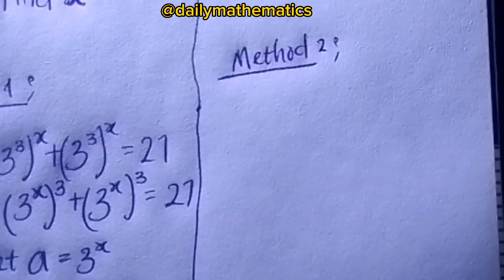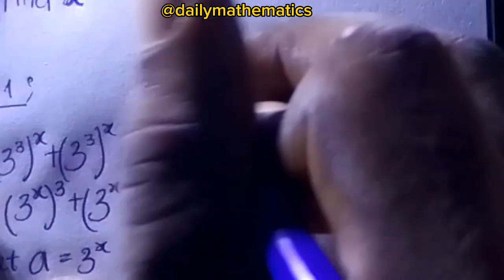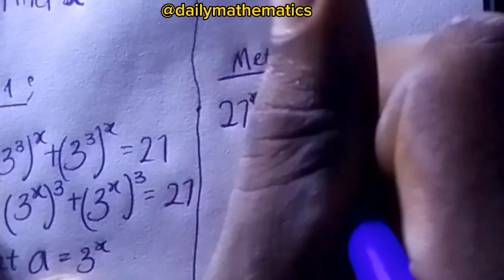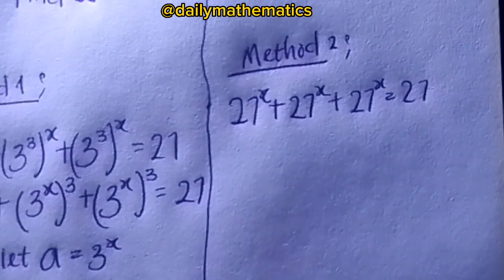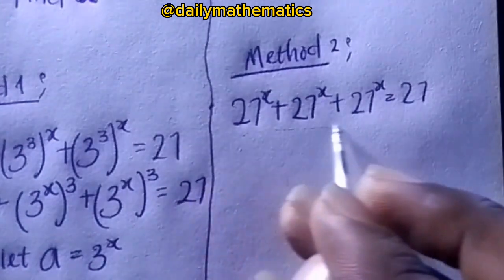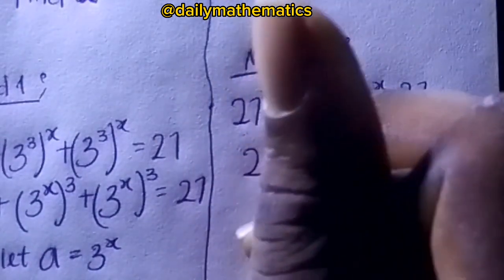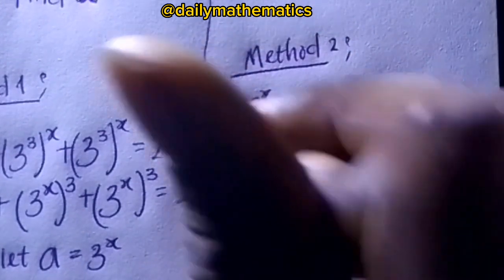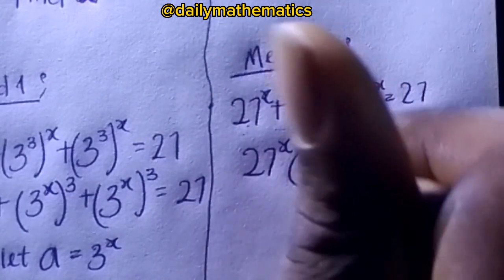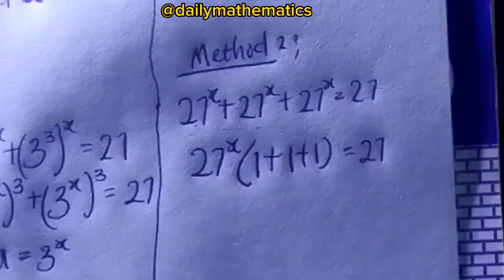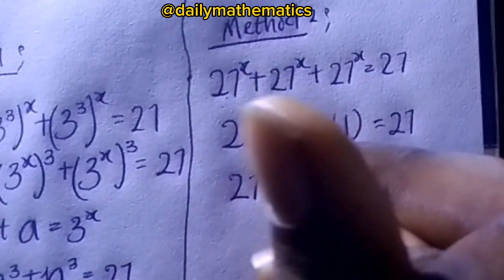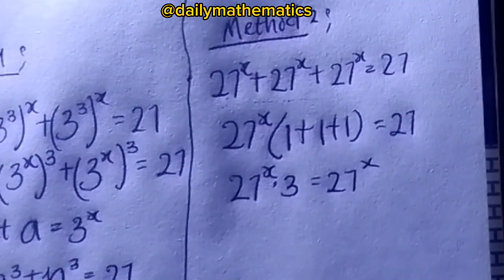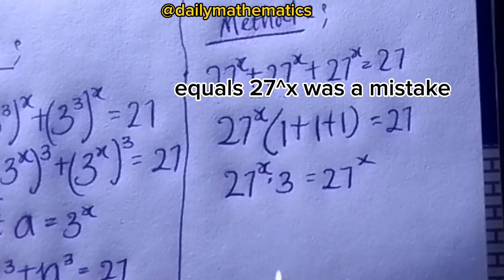Method 2: Starting again with 27^x + 27^x + 27^x = 27. Notice 27^x is common across all three terms on the left side, so we factor it out. This gives 27^x times (1 + 1 + 1) equals 27, which simplifies to 27^x times 3 equals 27.